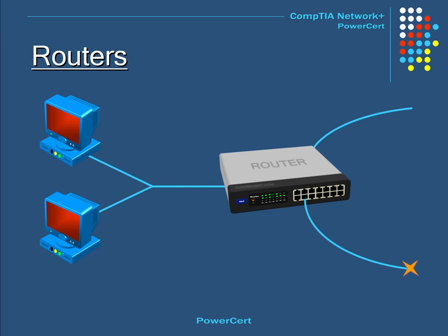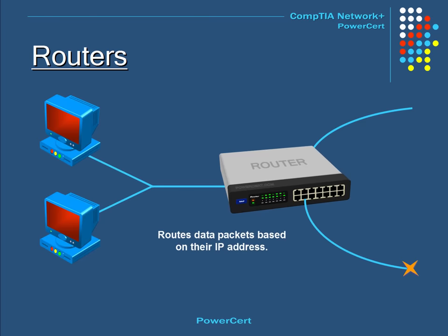A router is a device that routes or forwards data from one network to another based on their IP address. When a data packet is received by the router, it inspects the packet and determines if it was meant for its own network or another network. If the router determines the packet is meant for its own network, it receives it. If not, it sends it off to another network. So a router is essentially the gateway for a network.